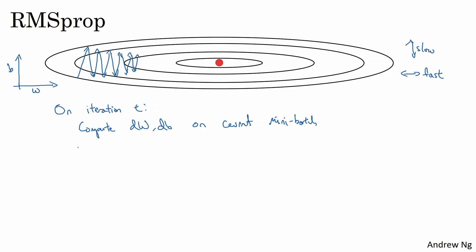So instead of keeping this exponentially weighted average as vdW, I'm going to use new notation sdW. So sdW is equal to beta times the previous value plus 1 minus beta times dW squared.